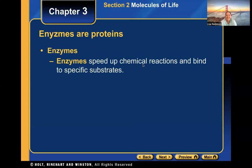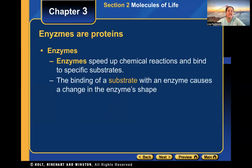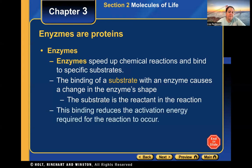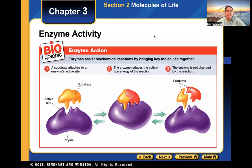Enzymes speed up reactions — they make them go faster. They bind to specific molecules called substrates, and that binding causes a slight change in the enzyme's shape. These reactions would still happen without the enzyme, just very slowly. The substrate is a reactant in the reaction and gets converted to a product. This binding reduces the energy needed for the reaction to occur, which is called activation energy.